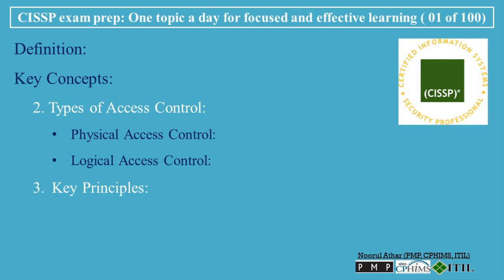3. Key Principles. Least Privilege: users should be granted the minimum level of access necessary to perform their tasks, minimizing the risk of accidental or malicious misuse. Need to Know: access is given only to those who need the information to perform their job functions. Separation of Duties: ensures that critical tasks are divided among multiple individuals to prevent fraud or error — for example, one person shouldn't be able to both authorize and execute a financial transaction.